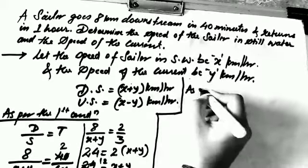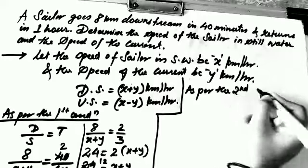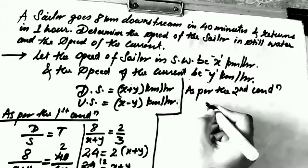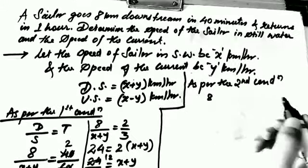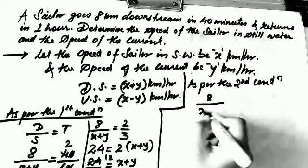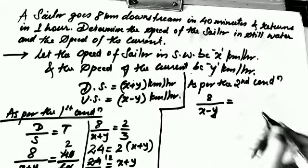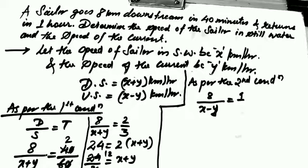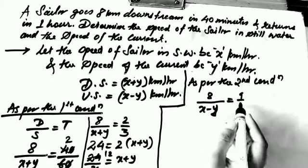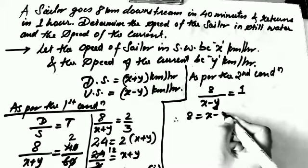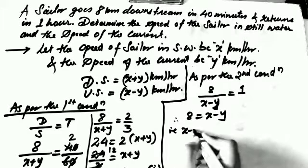As per the second condition, we again use distance divided by speed equals time. Distance is 8 km because he returns to the same point. Speed is x minus y (upstream speed), and time taken is 1 hour. Note that time is more now because speed is less — downstream took 40 minutes, but upstream takes 1 hour. Cross-multiplying: 8 equals x minus y into 1, so x minus y equals 8. This is Equation 2.